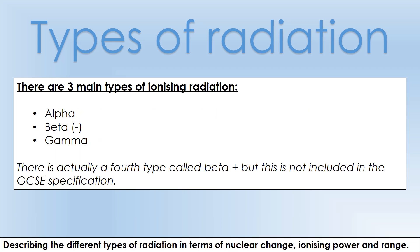There are three main types of ionizing radiation: alpha, beta, and gamma. Beta's full name is actually beta minus - there's a fourth type called beta plus, but we don't meet that in this specification because it involves antiparticles. So three types: alpha, beta, gamma.